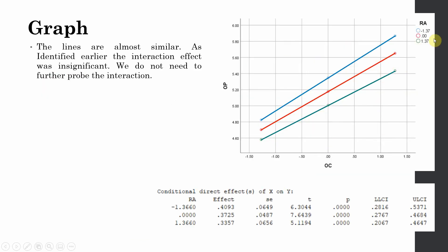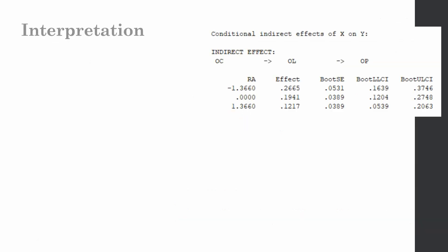With the change in role ambiguity, although there is some change, the effect is more or less the same. At high, low, or average role ambiguity, the impact of organizational commitment on organizational performance does not change, and all three gradients are more or less similar. We do not need to further probe the interaction because the interaction was insignificant.